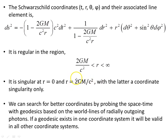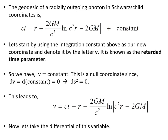The Schwarzschild radius is merely a coordinate singularity. We can search for better coordinates by probing the spacetime with geodesics based on the world lines of radially outgoing photons. If the geodesic exists in one coordinate system, it will be valid in all other coordinate systems. The geodesic of a radially outgoing photon in Schwarzschild coordinates is this object here, found in a previous video.